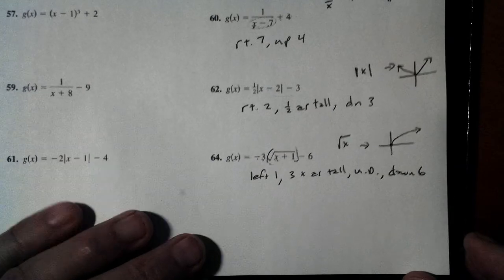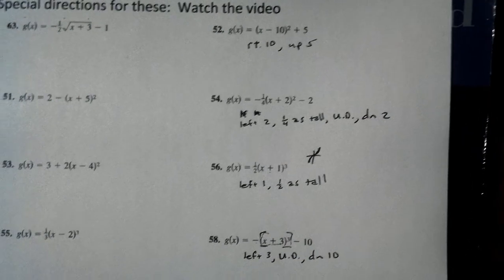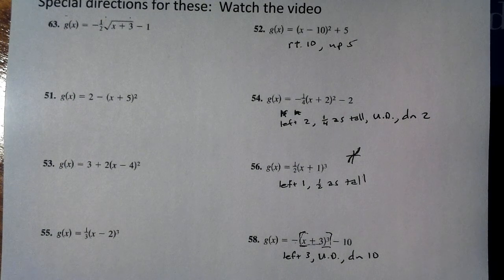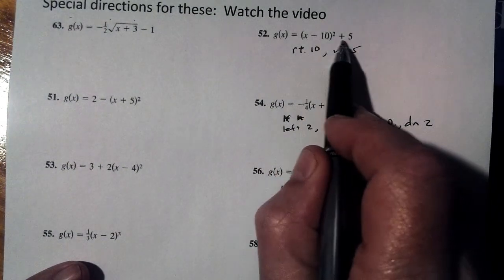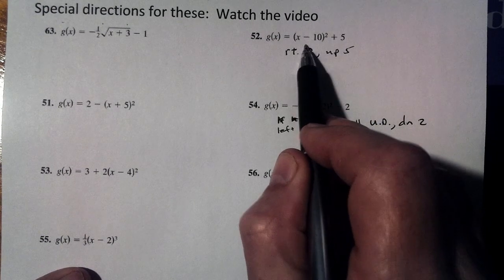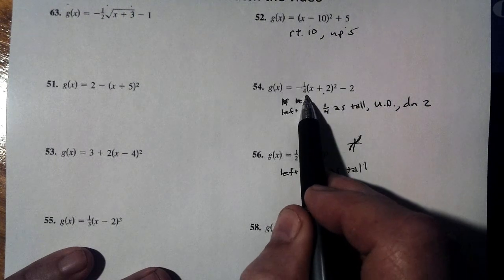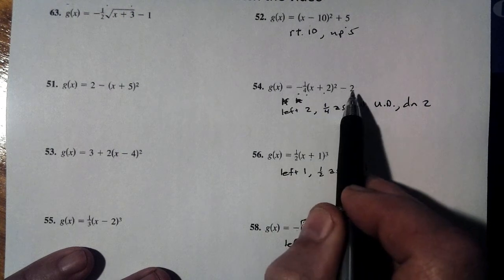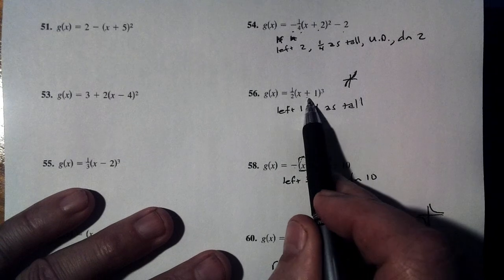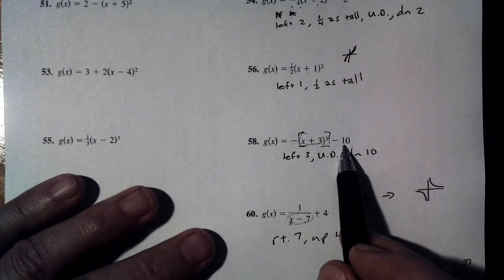And you can see where I think you can get through these pretty quickly. What we end up doing in class, and it's a lot of fun, hopefully we meet, we're going to do some of this stuff in class, is I just touch, and just as a chorus, the whole class would just go right, ten, up, five, left, two, 1/4 as tall, upside down, down, two, left one, half as tall, left three, upside down, down, ten.